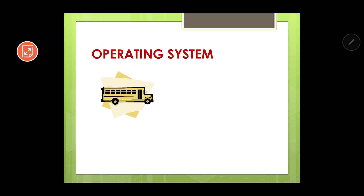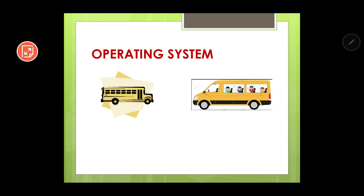Let us say there is a school bus — the bus in which you travel to school. Can the school bus travel on its own if only the bus is there? No, it cannot travel on its own. Now let us say the school bus is there and all the students have got into the bus, but something is missing. What is missing? The driver is missing — there is no driver in the school bus.